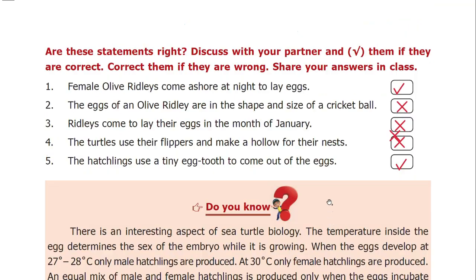Next, Section 2 true or false. First: female olive ridleys come ashore at night to lay eggs — this is right. The eggs of an olive ridley are in the shape and size of a cricket ball — this is wrong; it is a tennis ball. Ridleys come to lay their eggs in the month of January — this is wrong.